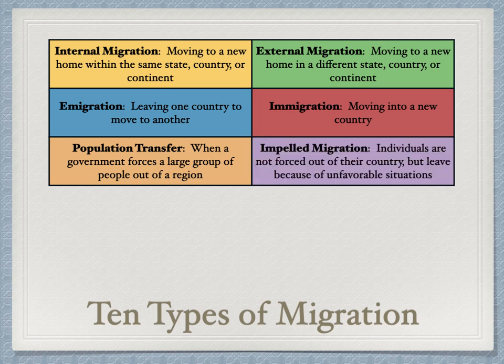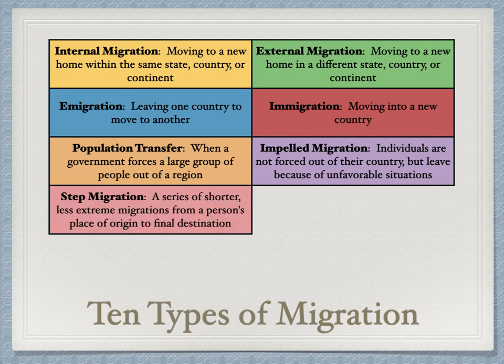Impelled migration is where individuals are not forced out of their country but leave because of unfavorable situations. A U.S. history example is the Great Migration, where African Americans left the South in large numbers because of Jim Crow laws, moving north hoping for better jobs and opportunities. Step migration — making a series of shorter migrations from origin to final destination — is not something you'll need to know for the test.